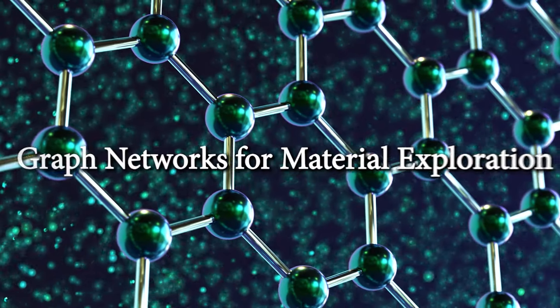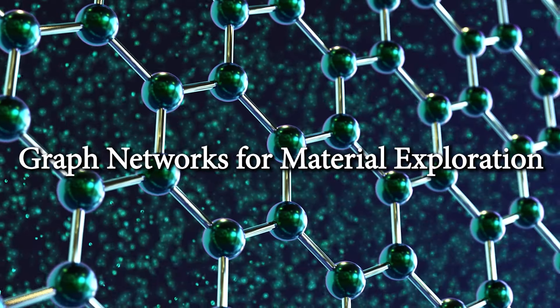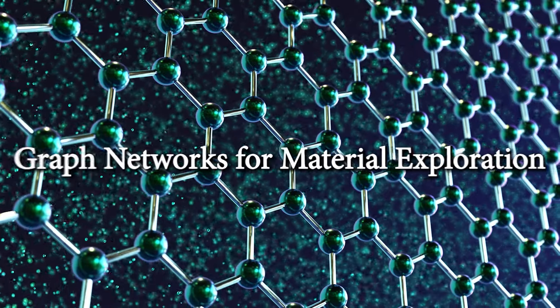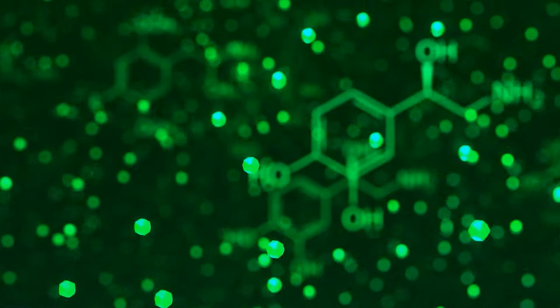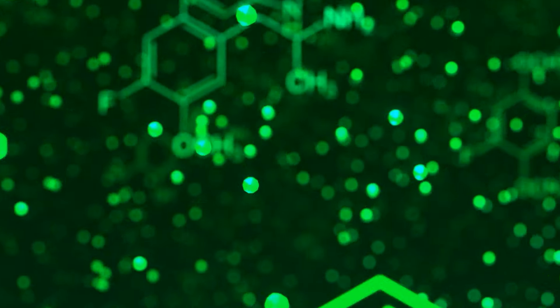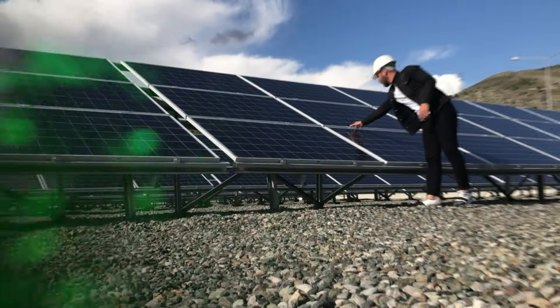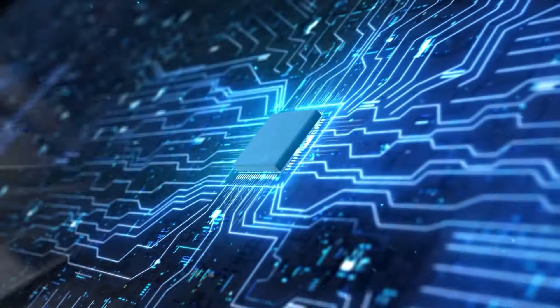Gnome, short for Graph Networks for Material Exploration, employs deep learning, a form of artificial intelligence, to unravel the structure and characteristics of new materials solely from their chemical makeup. Why does it matter? Well, materials surround us, from solar panels and phone batteries to computer chips.